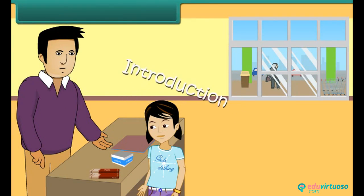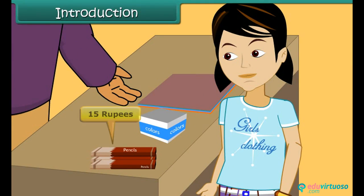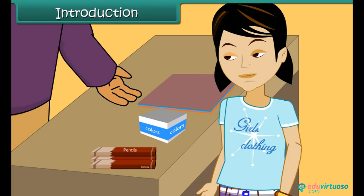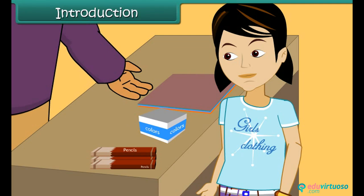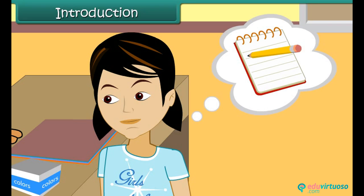Rita has bought pencils for 15 rupees, colors for 25 rupees, and pastel sheets for 12 rupees. The shopkeeper asks her to pay 52 rupees. Rita wants to verify, but there is a problem — she cannot do it without writing the numbers down on paper. She cannot perform mental calculations. This shows how important mental arithmetic is.